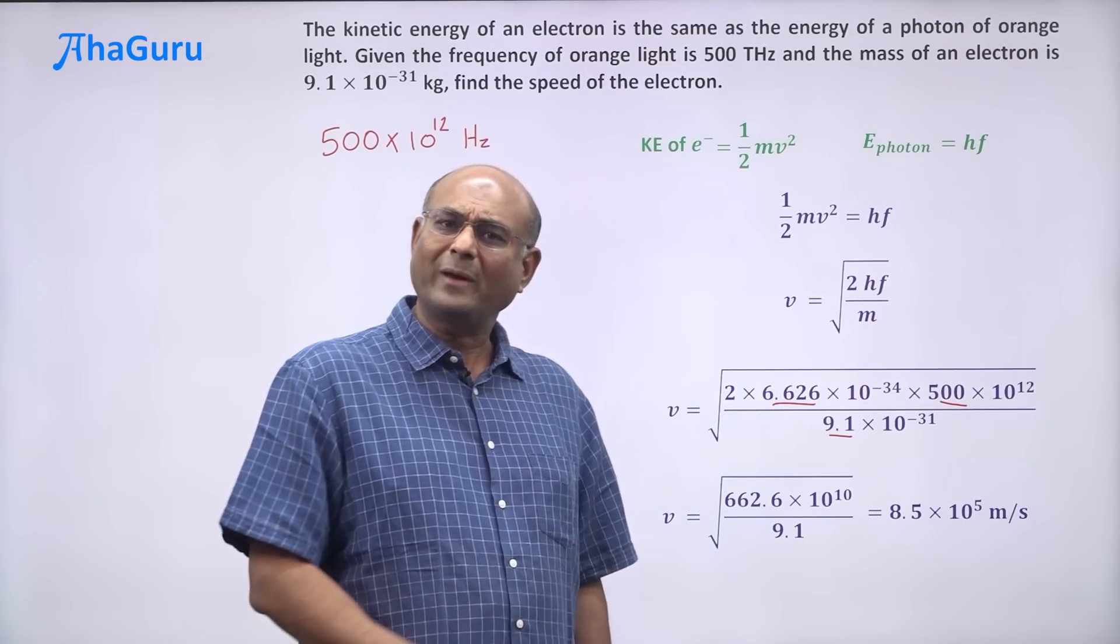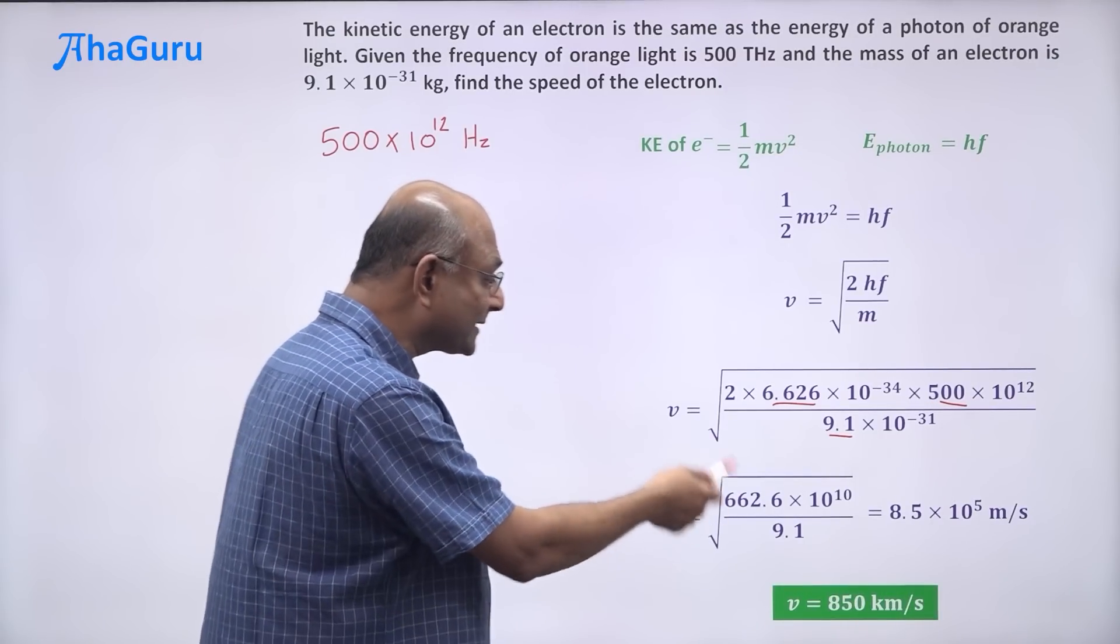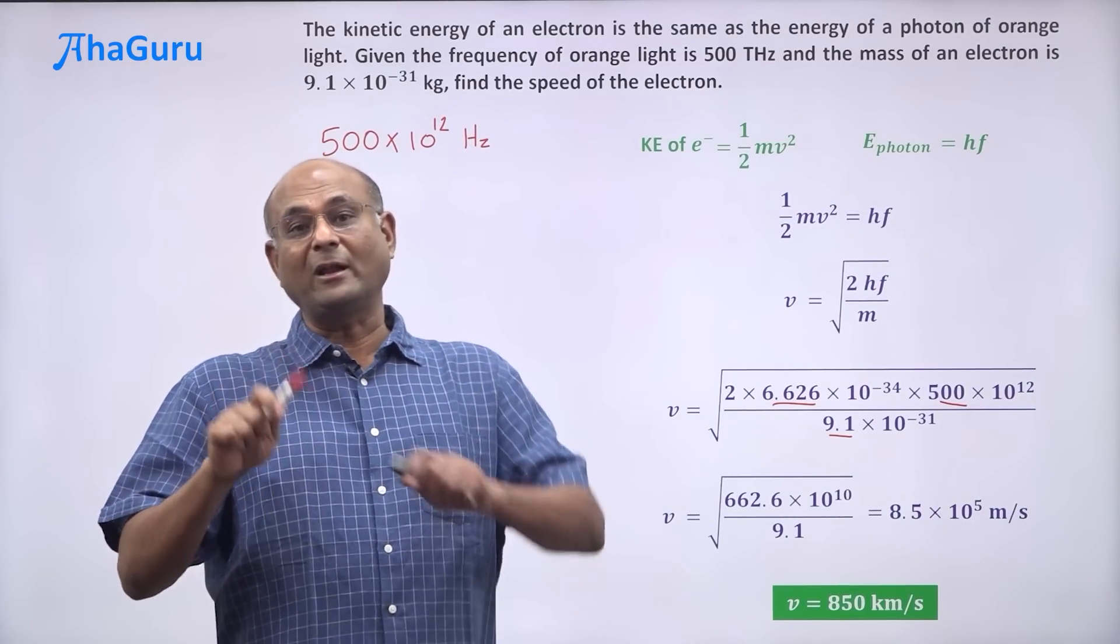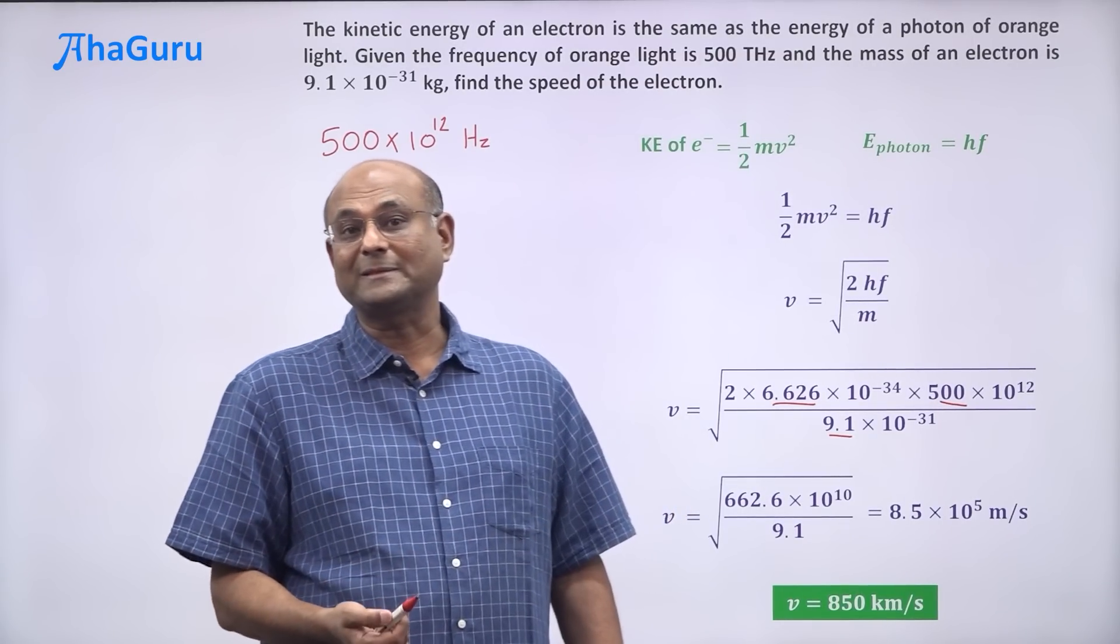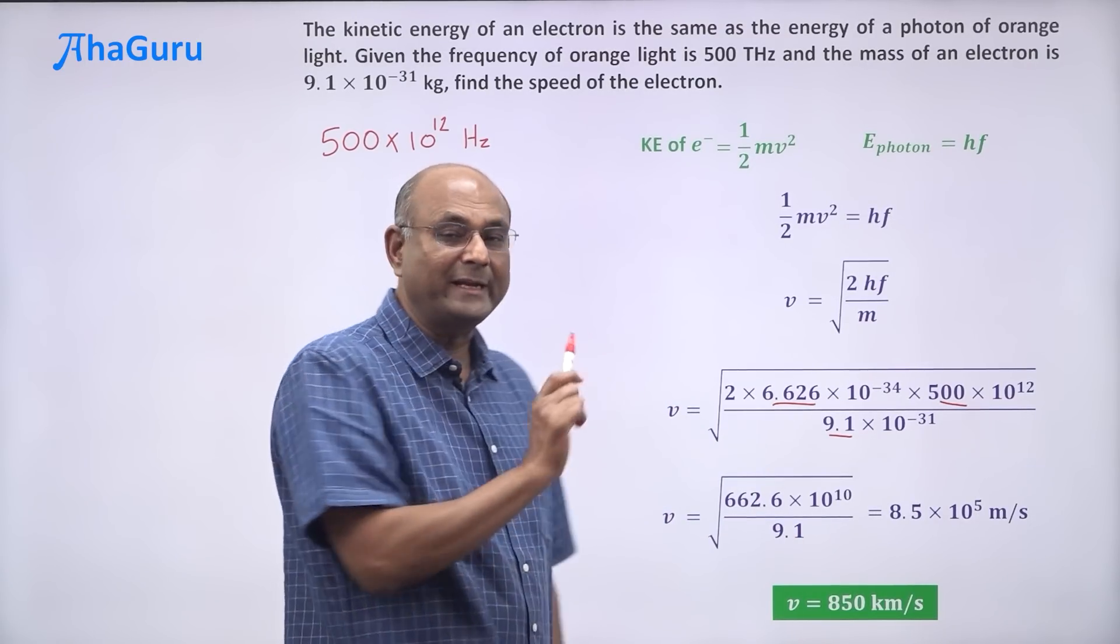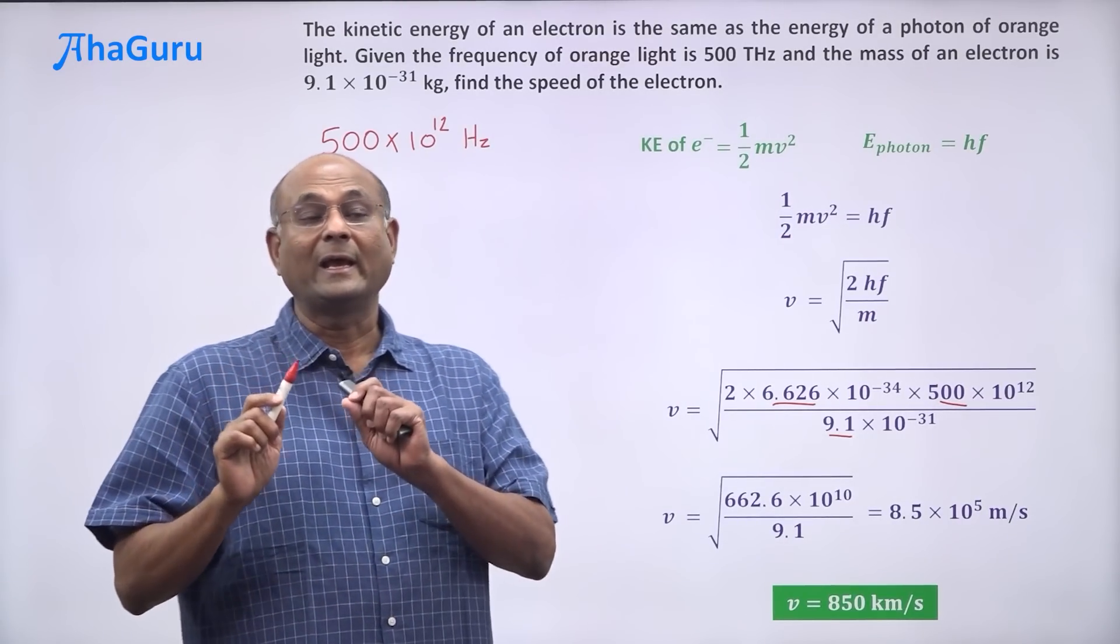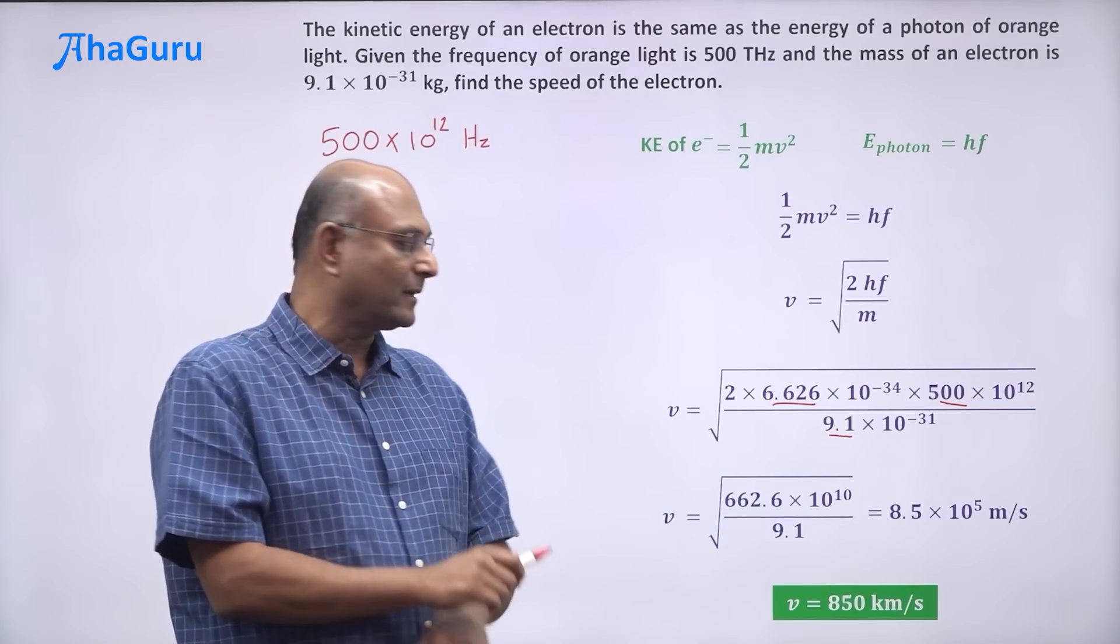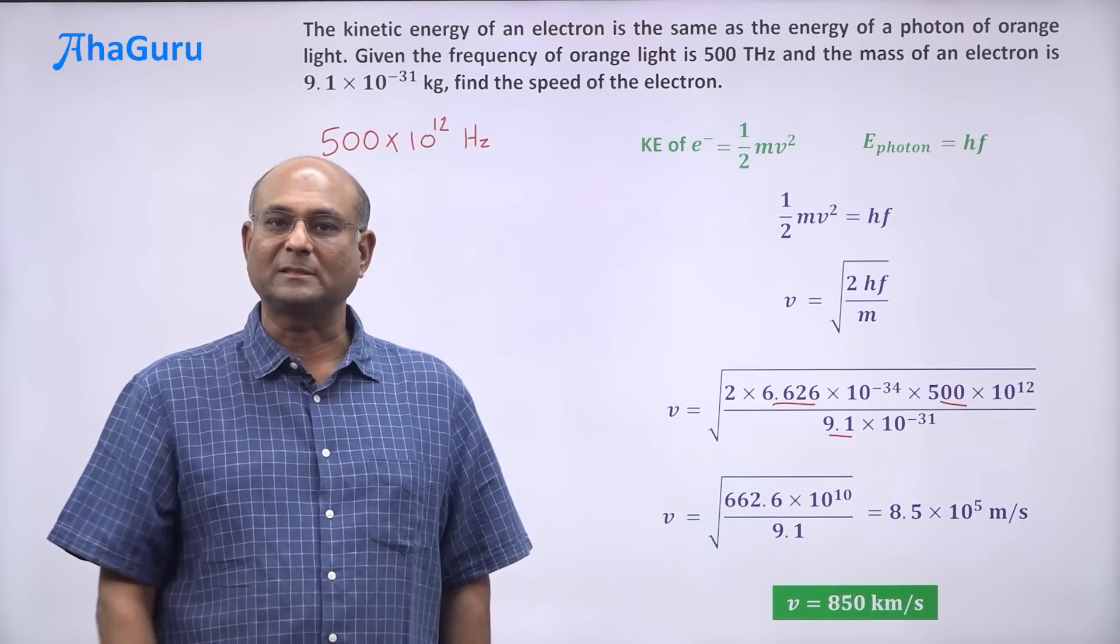But wait a minute, that is quite large. Actually if you think about it, it is 850 kilometers per second, that is a lot of speed. But compared to the speed of light, this is not a lot of speed. Speed of light is 3 × 10^8, 3 lakh kilometers per second, that is the speed of light. This is 850 kilometers per second. This is very small compared to the speed of light. So this formula that we have used for the electron's kinetic energy, that is correct. Because the speed is much less than the speed of light. So what is the speed of the electron? 850 kilometers per second.